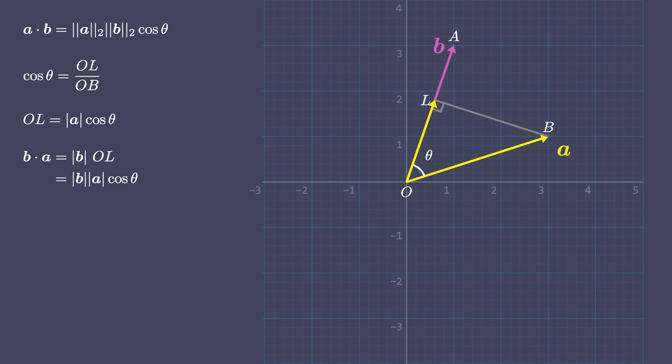Also notice that even if we scale any of these vectors, the dot product would be a scalar multiple of that scale factor.